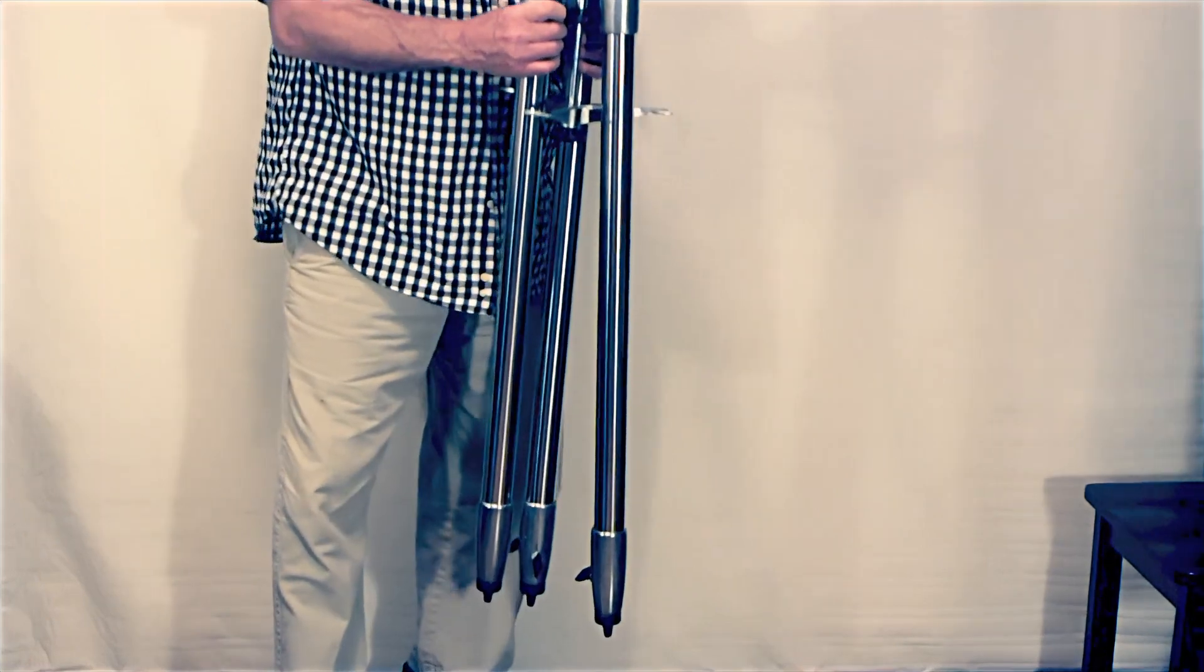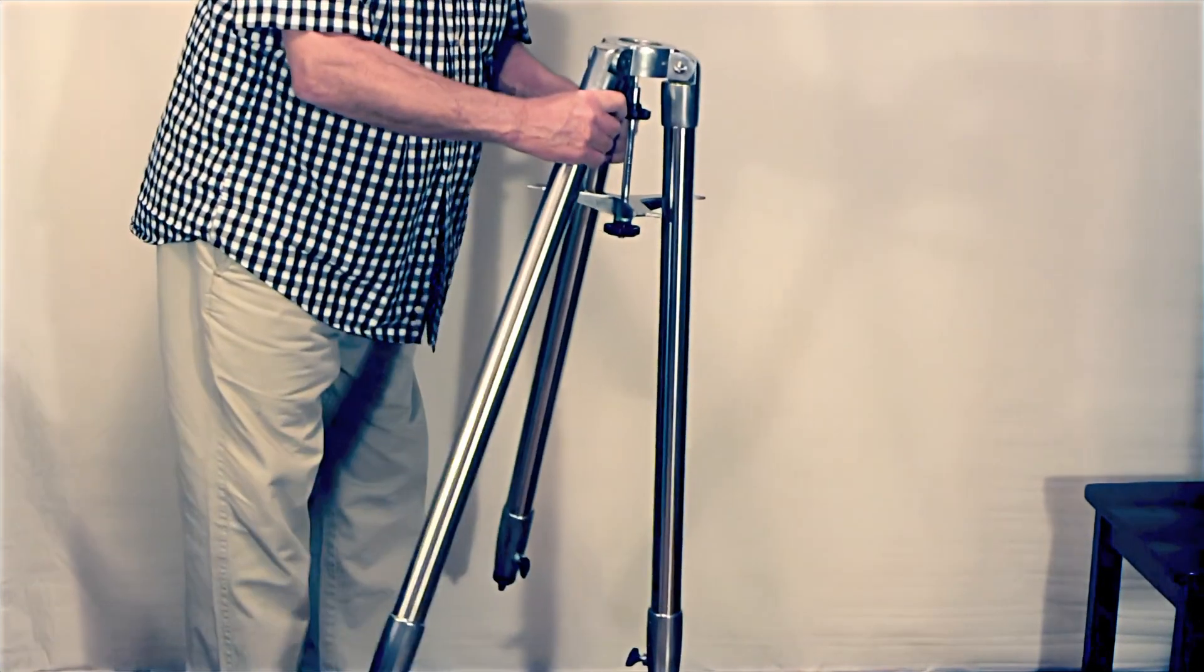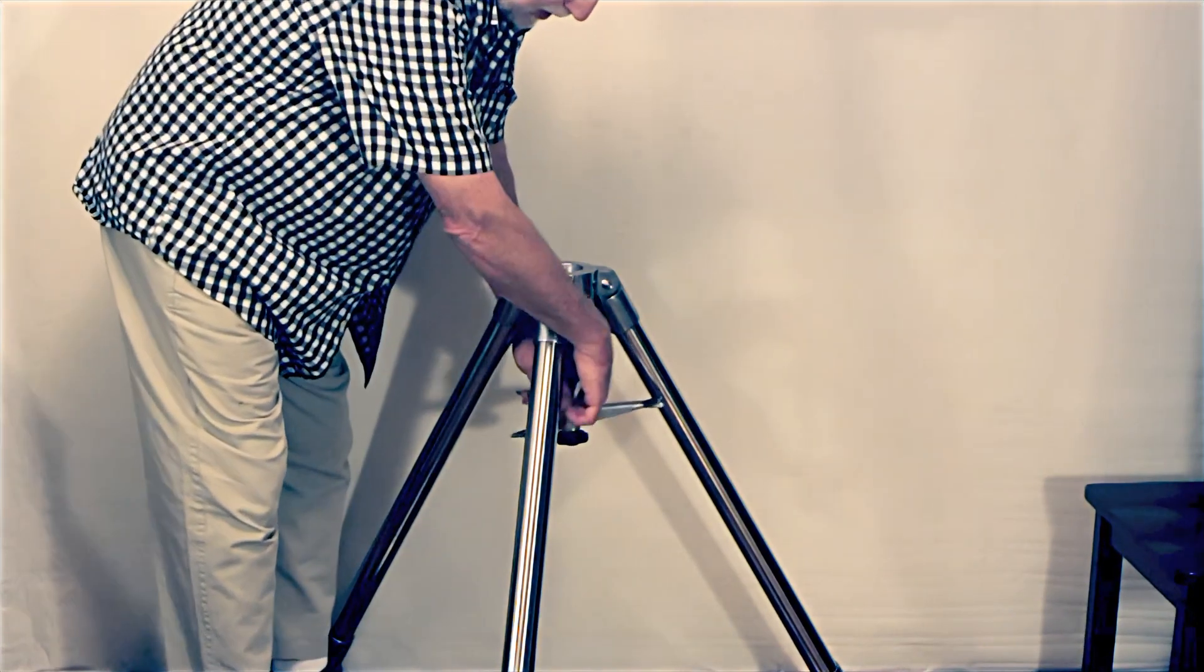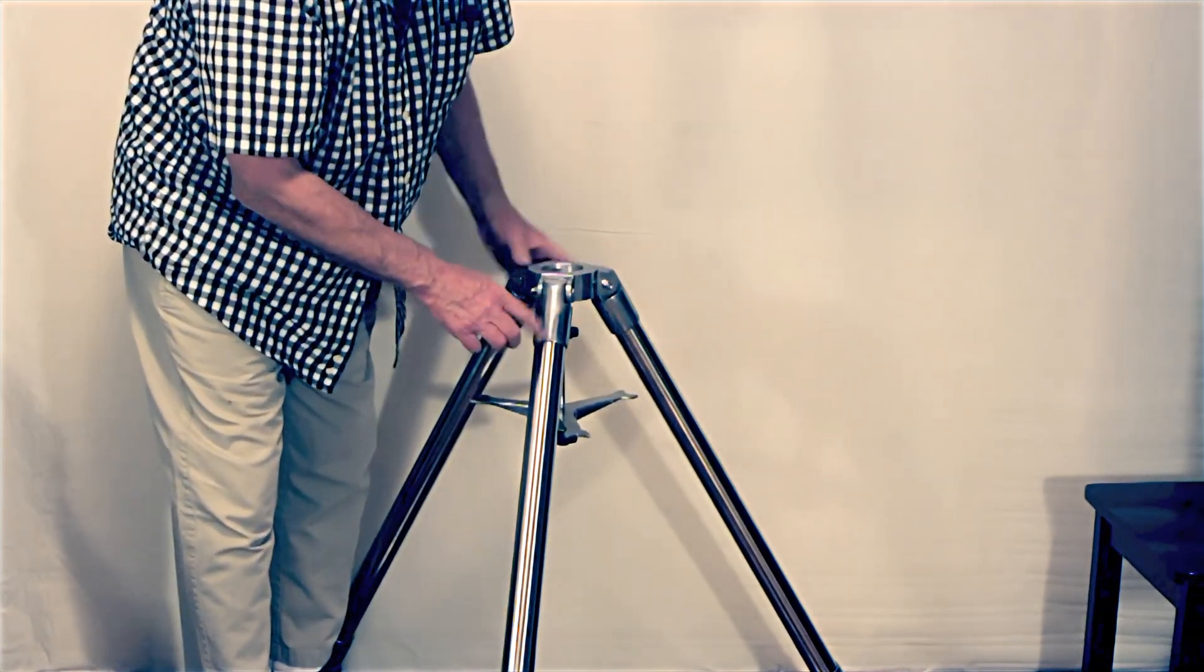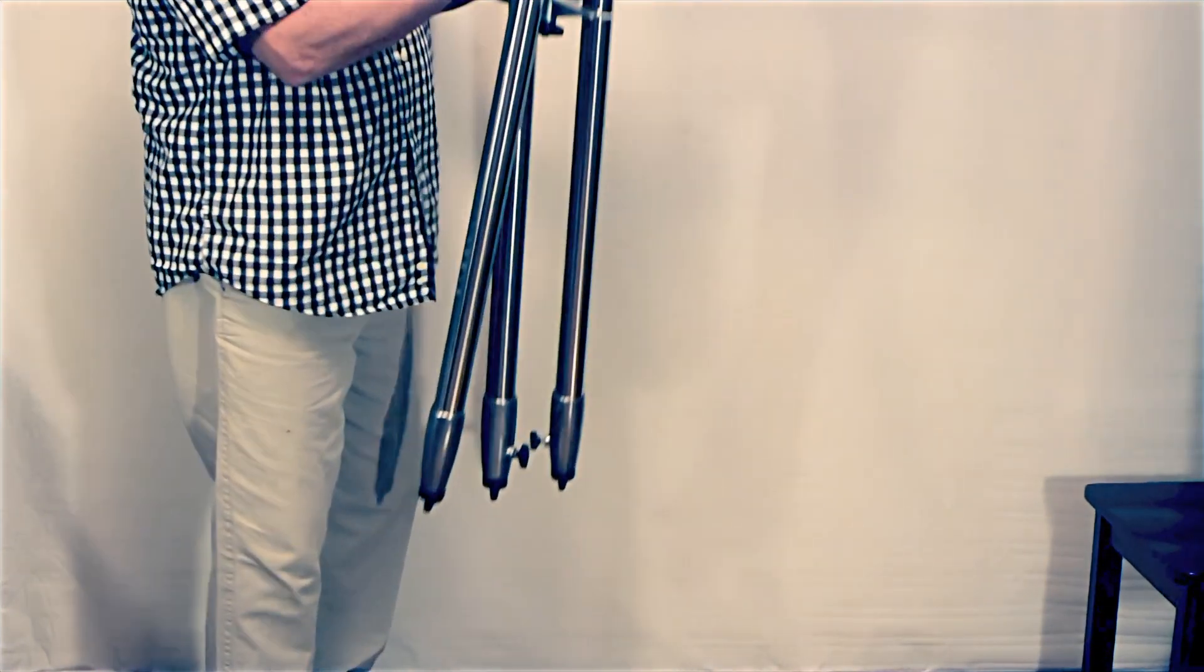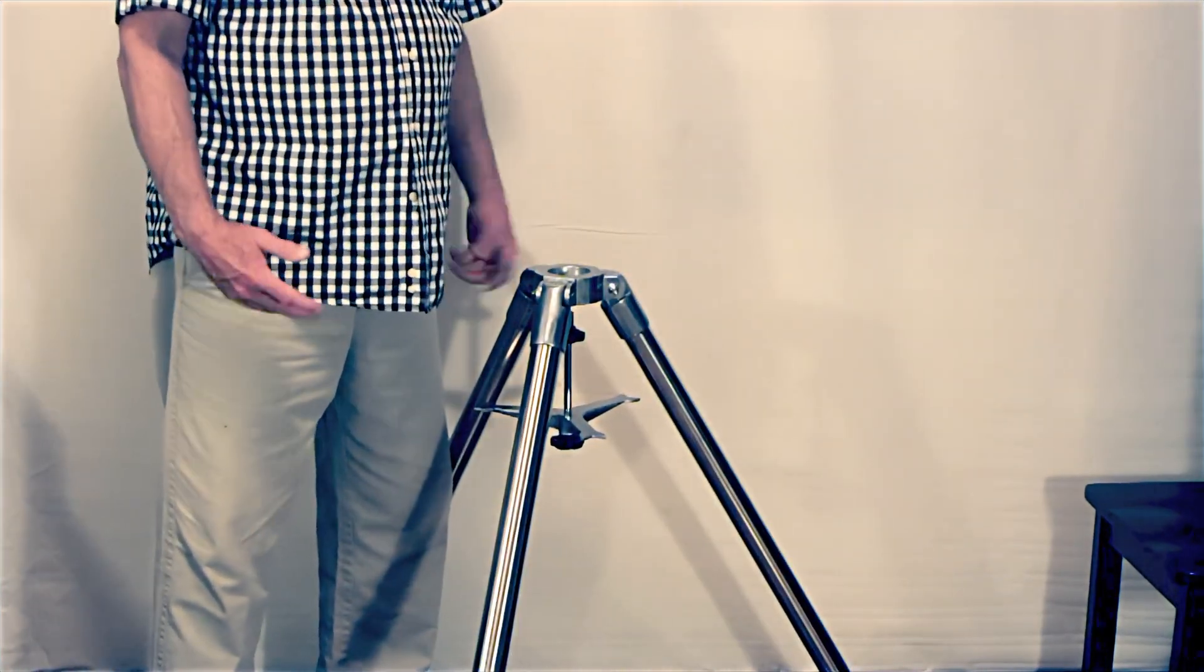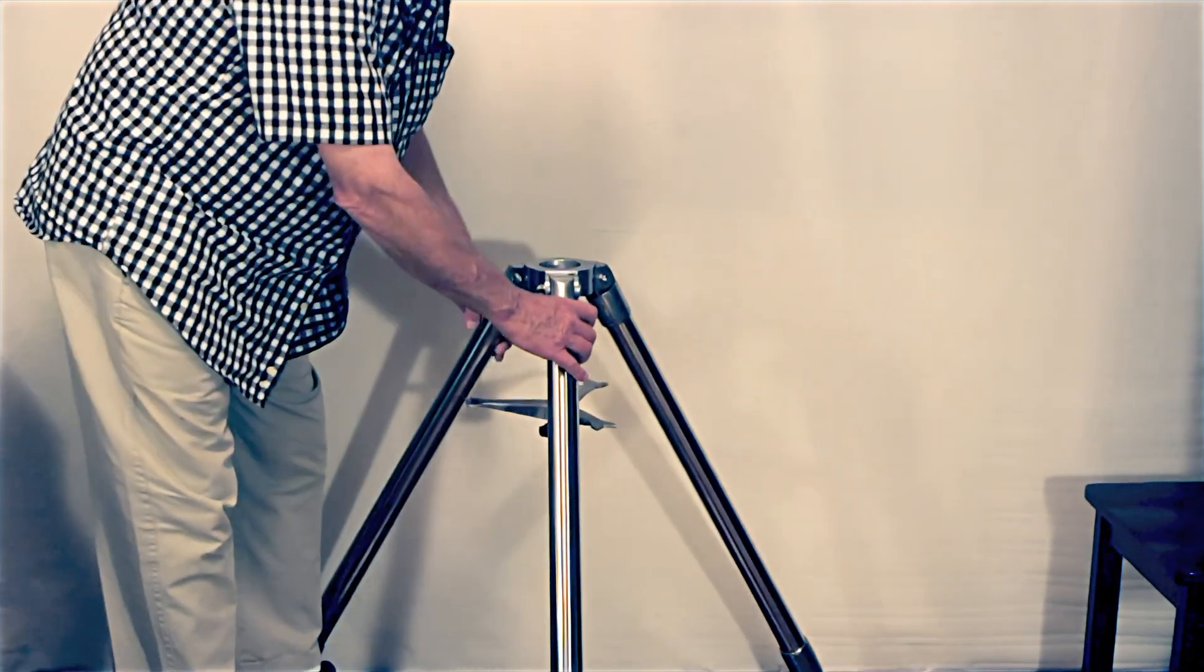Here we have a Celestron G4 tripod, which has been fairly heavily modified. First thing I did was to take some unnecessary material out of the spreader here. I took the aluminum castings off here and here, stripped all the paint off there. I wanted something that would go with the Questar, that would look right with the Questar. So that's what I was shooting for there.